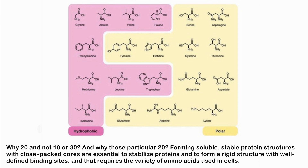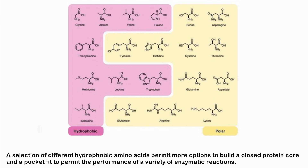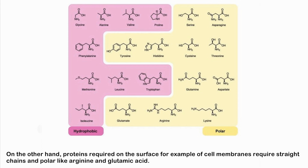A selection of different hydrophobic amino acids permits more options to build a closed protein core and the pocket fit to permit the performance of a variety of enzymatic reactions. On the other hand, proteins required on the surface — for example, of cell membranes — require straight chains and polar amino acids like arginine and glutamic acid.